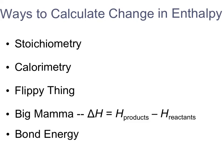Today we're going to look at some of the different ways to calculate the enthalpy of a reaction. We're going to slowly go through the list as days progress, and today specifically we're going to look at the use of stoichiometry and calorimetry to solve for enthalpy. In following days we'll be looking at some other methods like the flippy thing, using the Big Mama equation, and also the use of bond energy to calculate enthalpy.